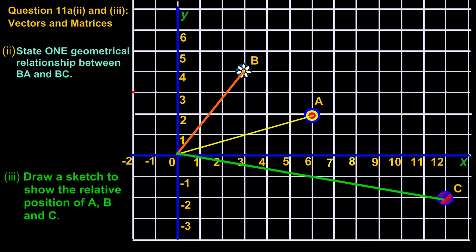Hey my friends, let's just quickly complete question 11a part 2 and 3. Now here in part 2 they're asking us to state one geometric relationship between the line segment BA and BC.